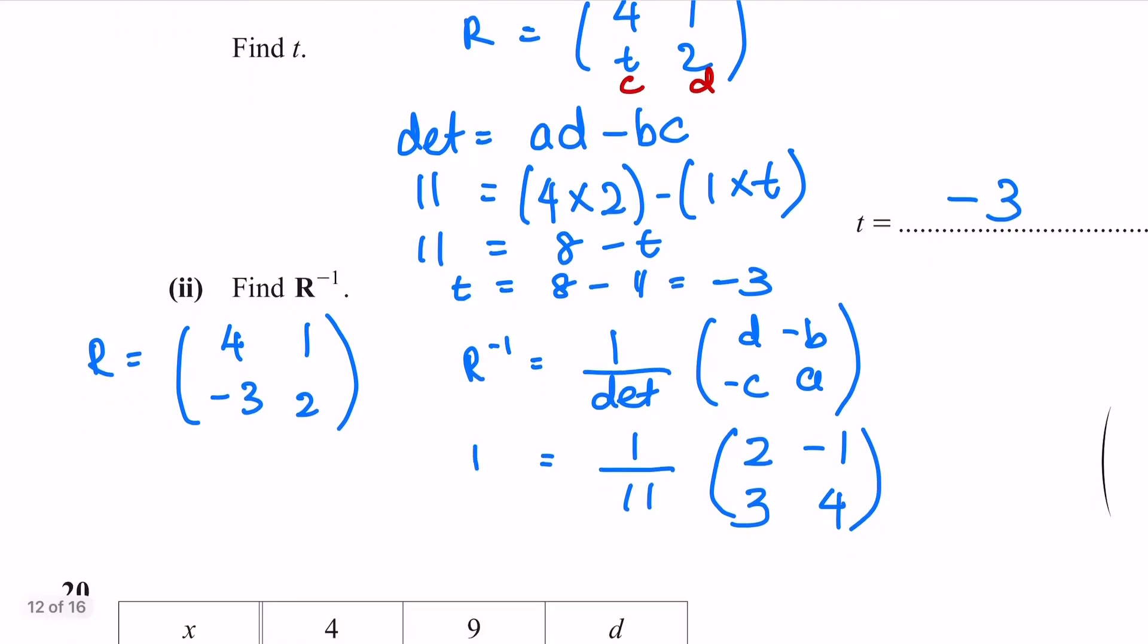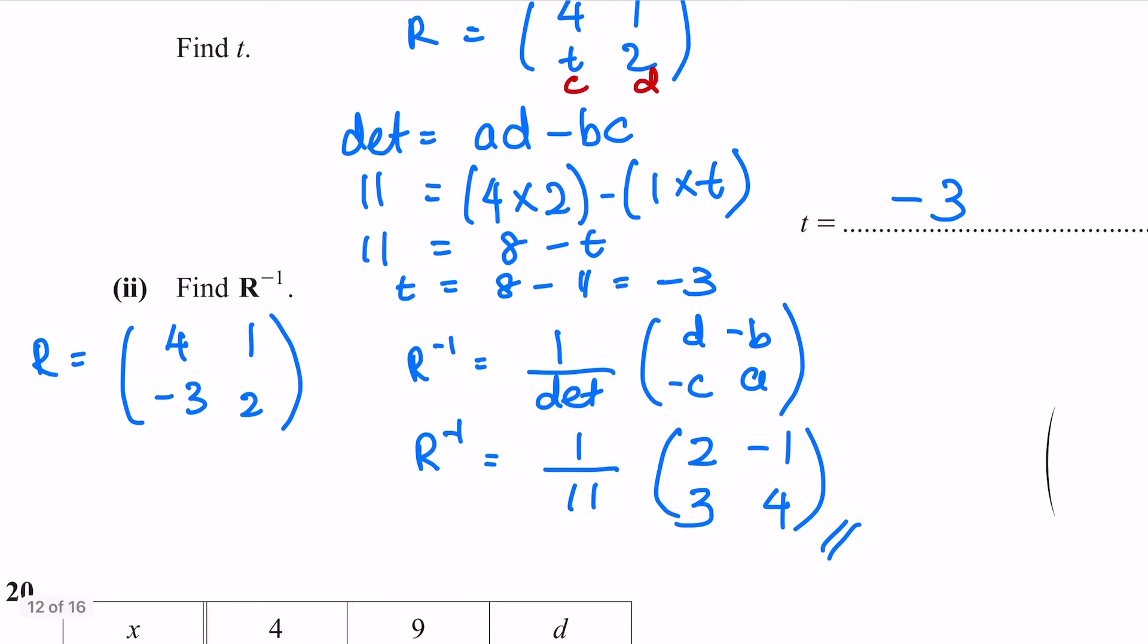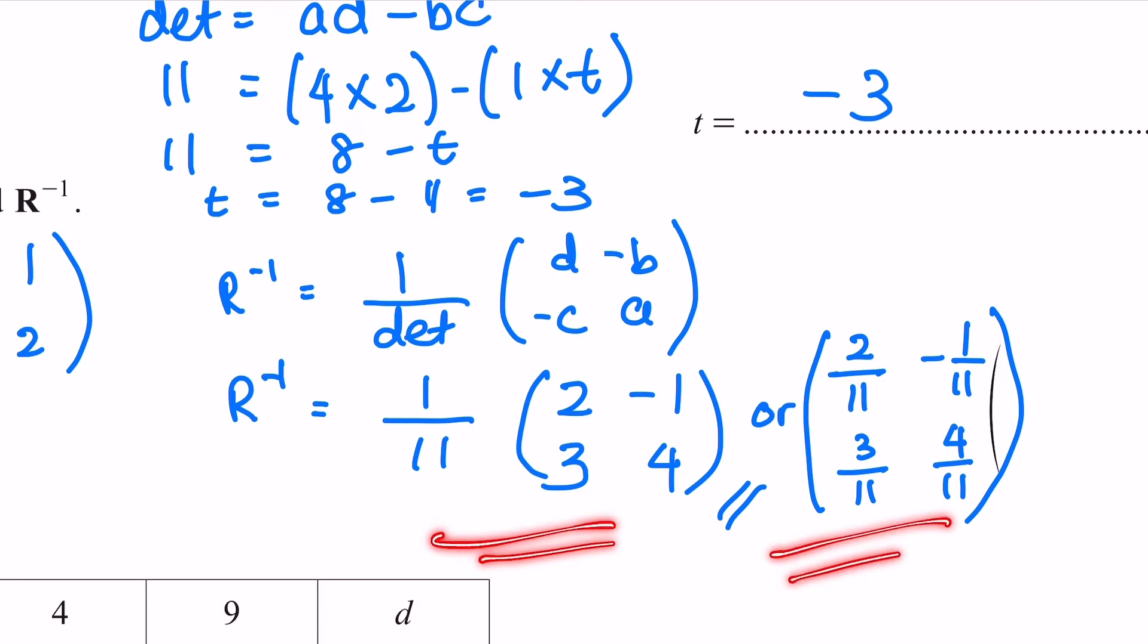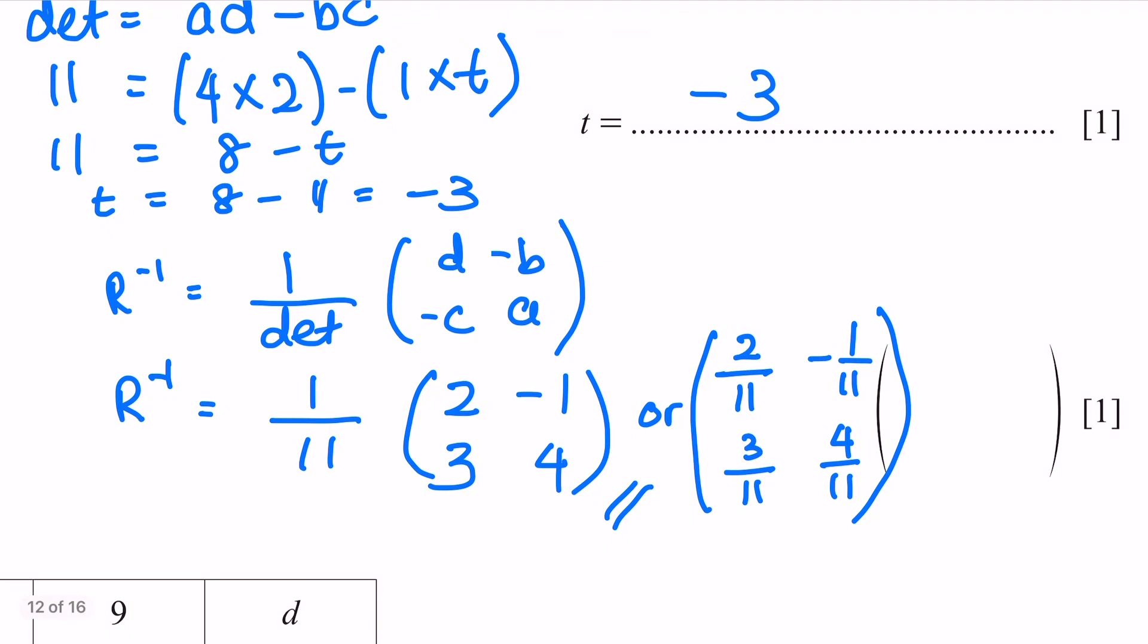That's all for the inverse of R. You can leave your answer like this, or you can expand this fraction to every number in the matrix here. It is also the same as expressing it this way: 2 over 11, -1 over 11, 3 over 11, 4 over 11. Either way is correct, it's up to you, but you must choose one to display on the space given here.